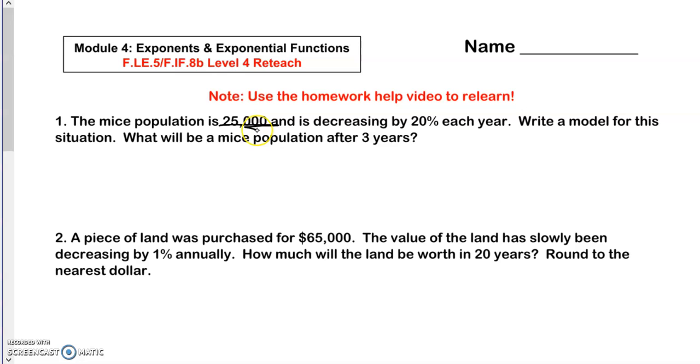The mice population is 25,000 and is decreasing by 20% each year. Write a model for this situation. What would the mice population be after three years?